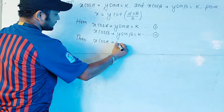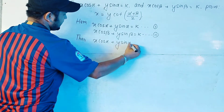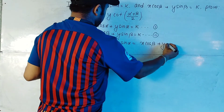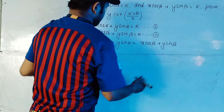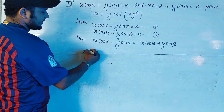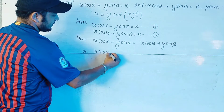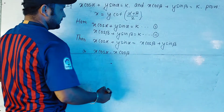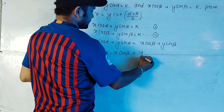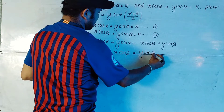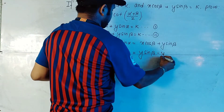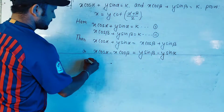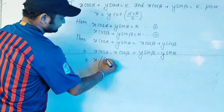We can write x·cos α + y·sin α = x·cos β + y·sin β, because both are equivalent to k. Rearranging, we get x·cos α minus x·cos β on the left side equals y·sin β minus y·sin α.